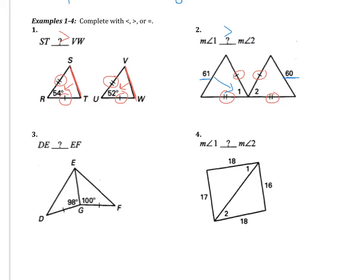For example three, there is one pair of congruent sides, and E-G is congruent to itself by the reflexive property. From the problem, we are comparing D-E to E-F. D-E is located across from the smaller angle — 98 compared to 100. 98 is smaller, so D-E will be smaller than E-F.